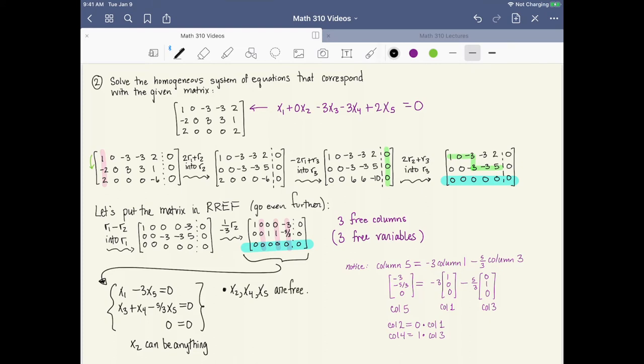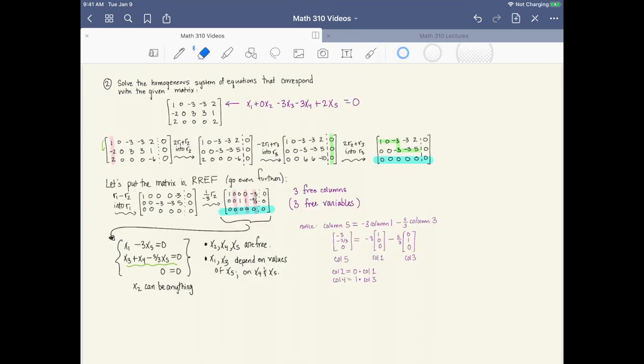But x1 is dependent on x5, and x3 is dependent on x4 and x5. So x1 and x3 depend on the values of x5 and x4 and x5 respectively.